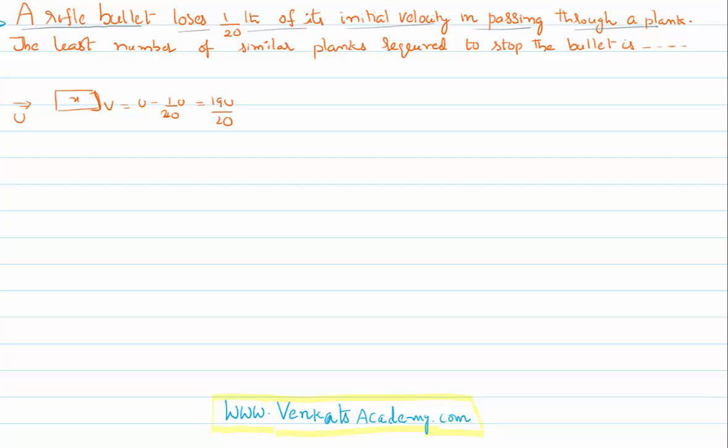That means this bullet is definitely having some acceleration. It's not acceleration, it is retardation, because its velocity is decreasing. I would like to calculate what is the retardation by using the formula v² - u² = 2as.